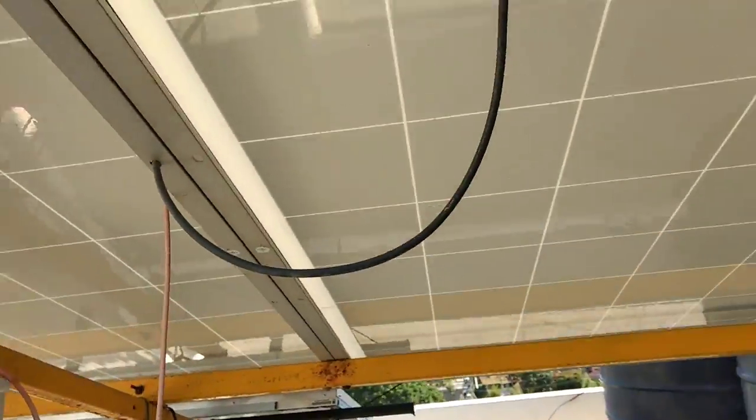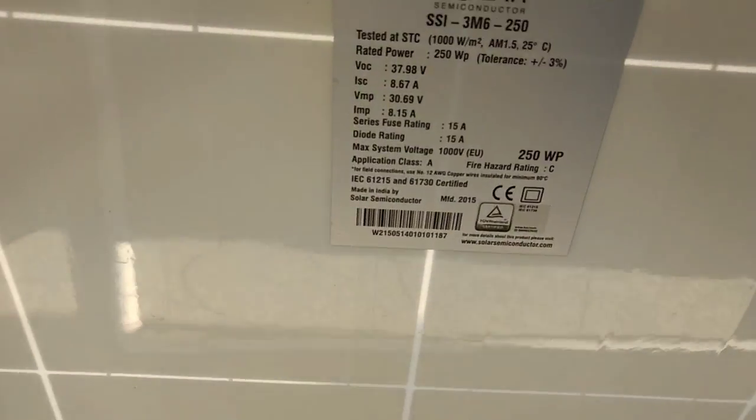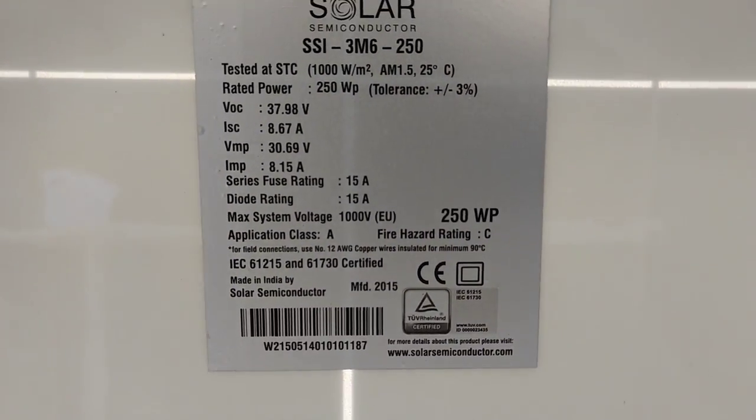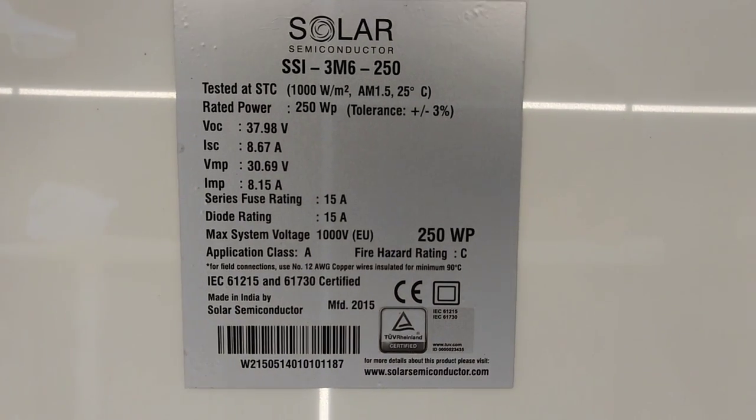Here you can see the specification of the panels which were installed last year. The VOC is 37.98 volt and current is about 8 amps.